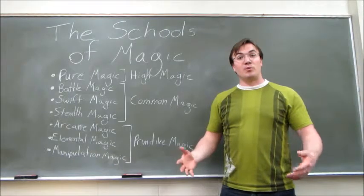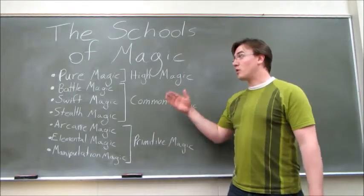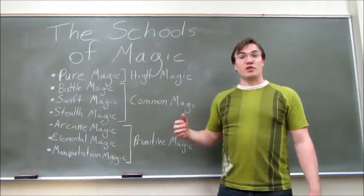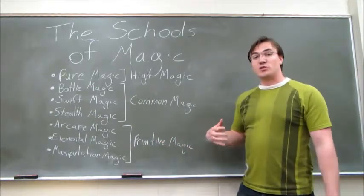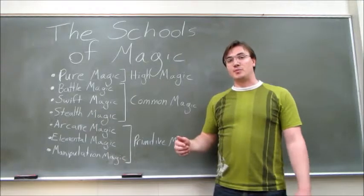When a character levels up and wishes to learn magic, he puts a point into one of these seven schools, which determines what type of components he can learn in that level. It also determines what sorts of bonuses he will receive when casting spells in the future.